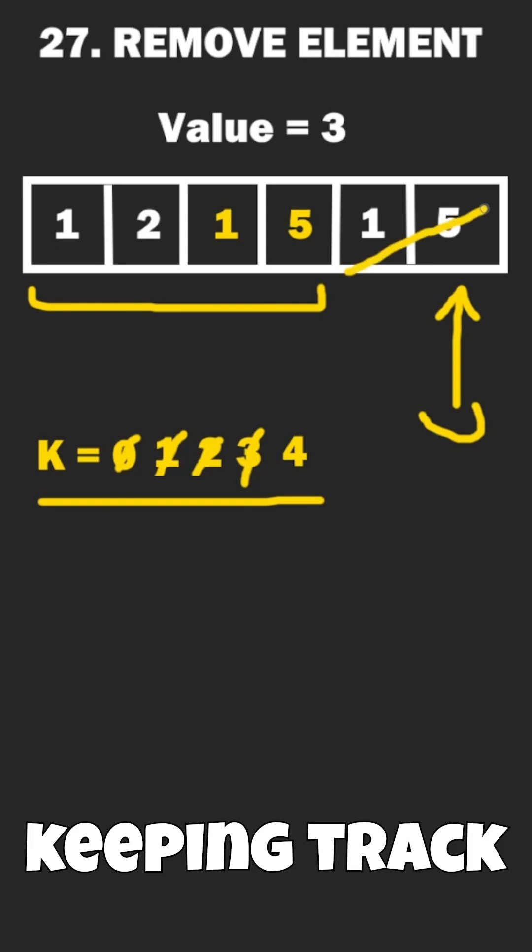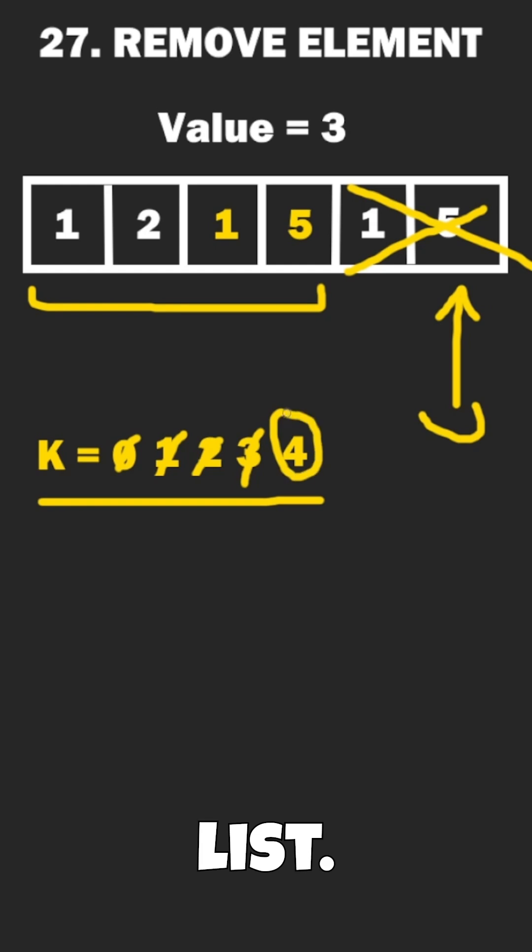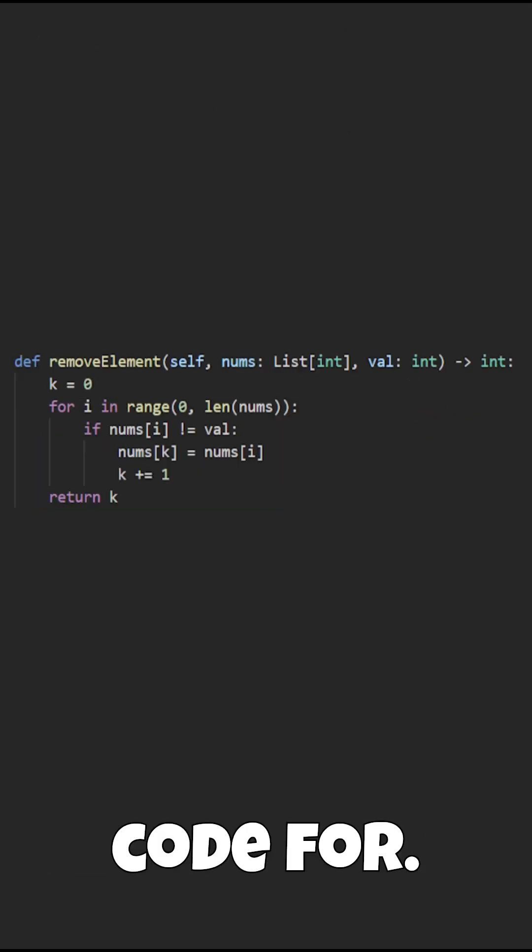Not only that, since k is keeping track of the values not equal to three, we can just return k as the number of values at the front of our list, ignoring everything afterwards. And here's the code.